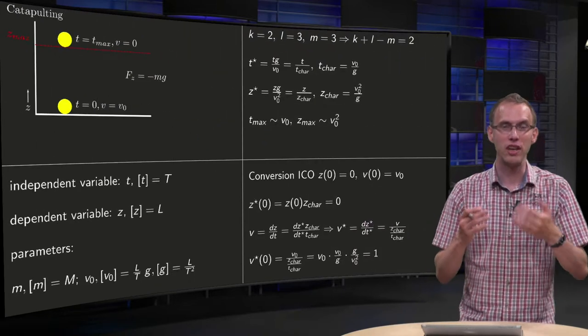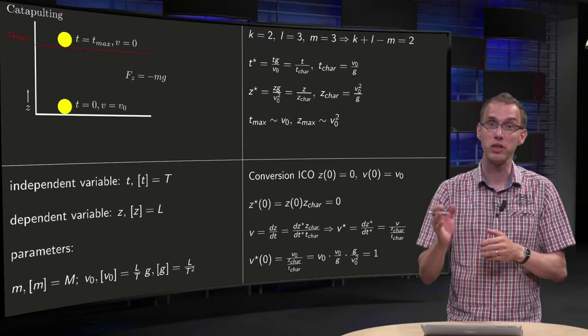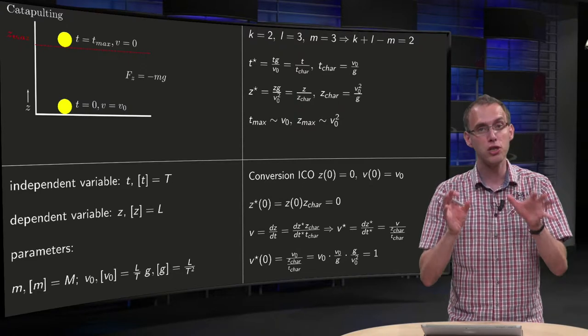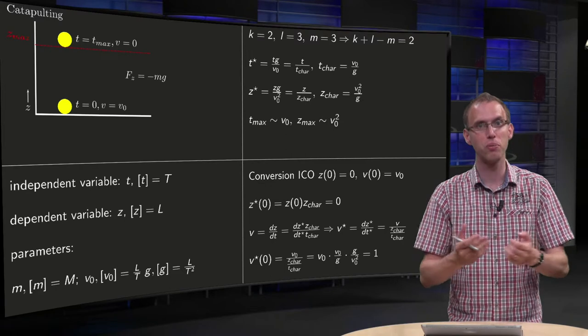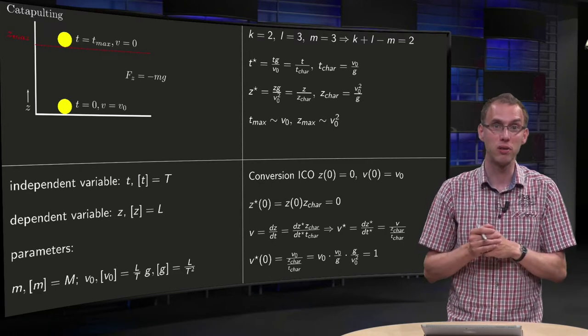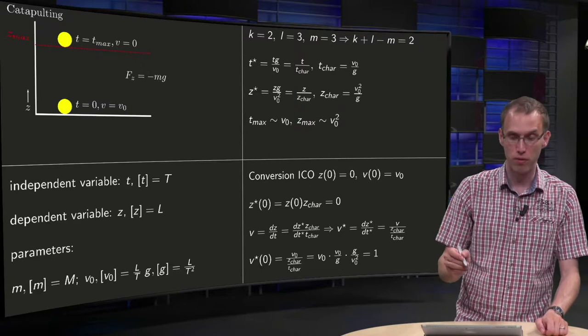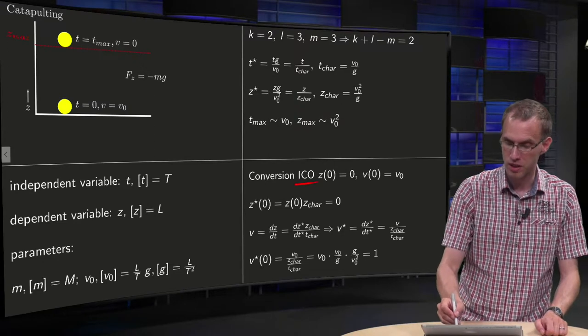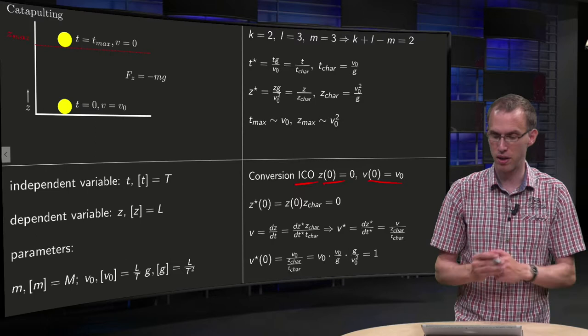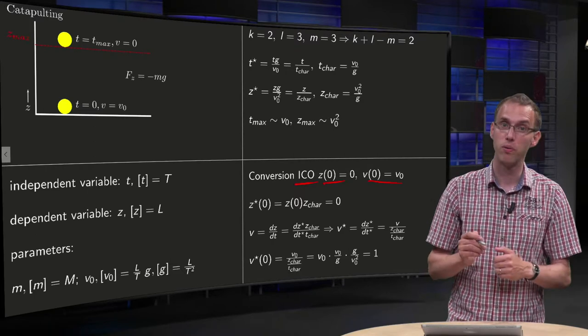Now let's try to solve our model using those dimensionless variables, just to illustrate how you convert your model into a model which only contains dimensionless variables. So first of all you have to convert the initial conditions: z at 0 equals 0 and v at 0 equals v0.